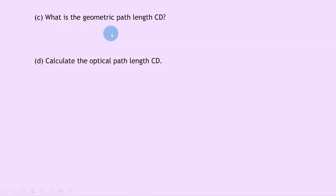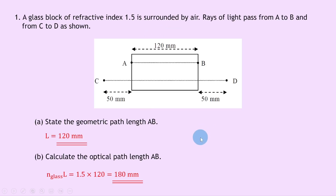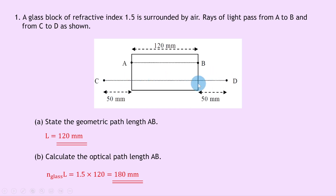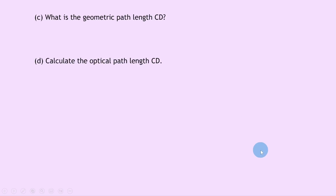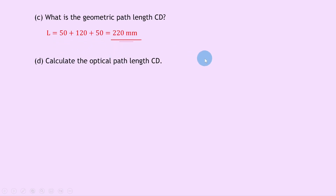Part C says what is the geometric path length CD? Looking back at the picture, the geometric path length from C to D is the total distance traveled: 50 millimeters through air, then 120 millimeters through the glass block, then another 50 millimeters through air. So L = 50 + 120 + 50 = 220 millimeters.